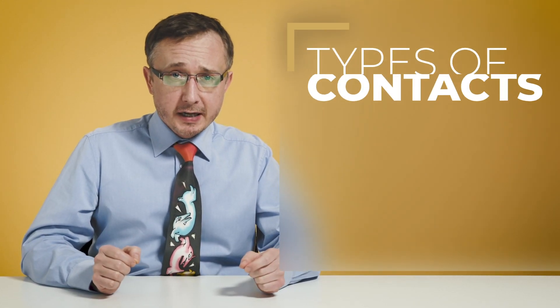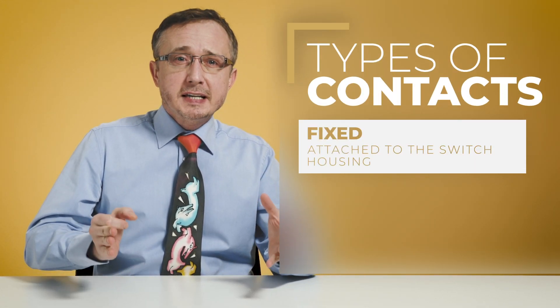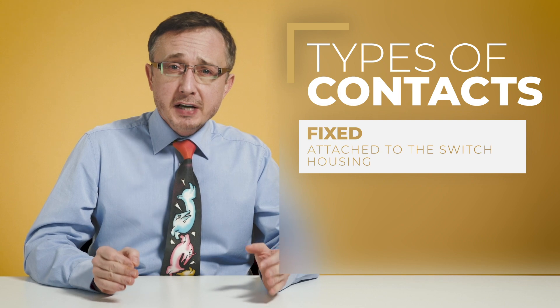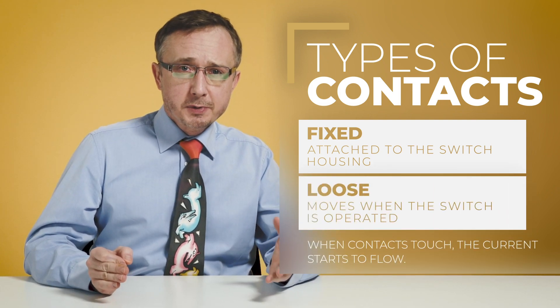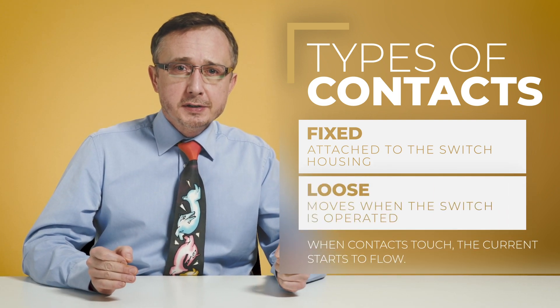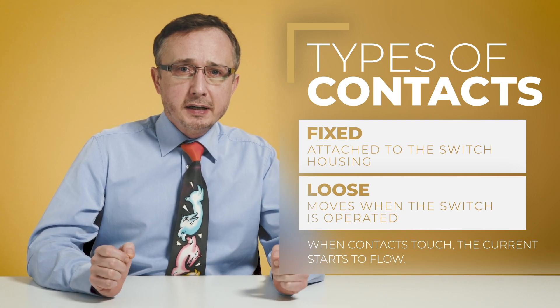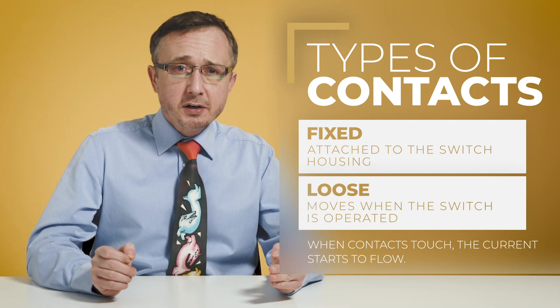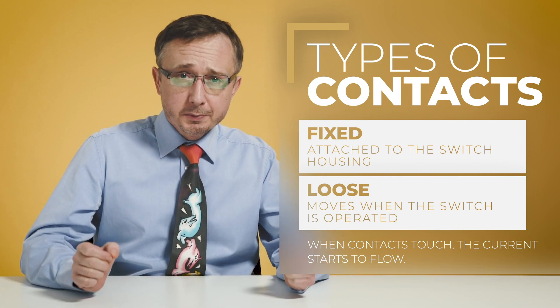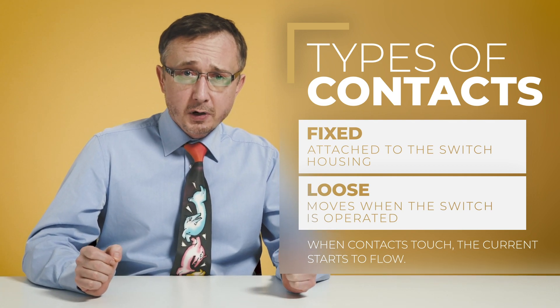Contacts are the heart of a switch. There are two types of contacts: a fixed contact, which remains attached to the switch housing, and a loose contact, which moves when the switch is operated. When the loose contact touches the fixed contact, an electric circuit is formed and the current flows. When the loose contact separates from the fixed contact, the circuit is broken.